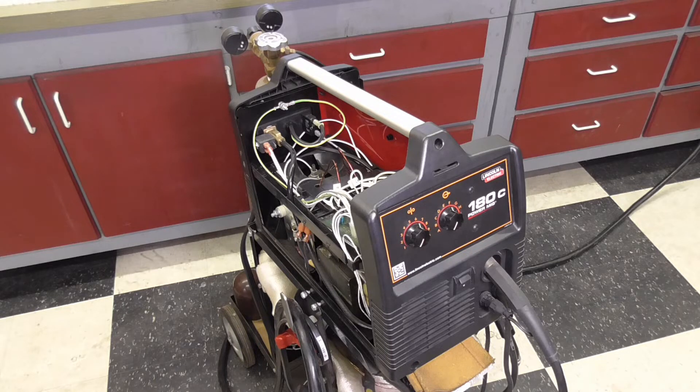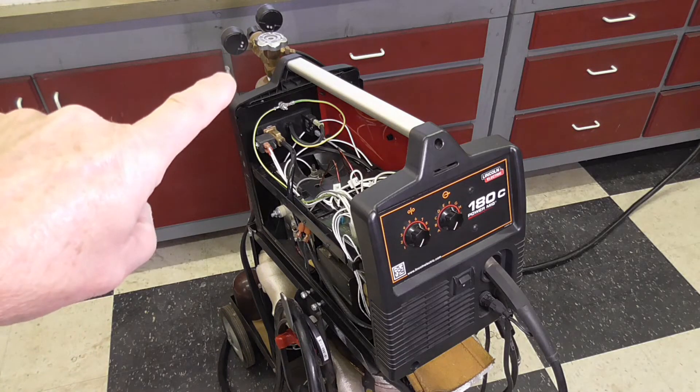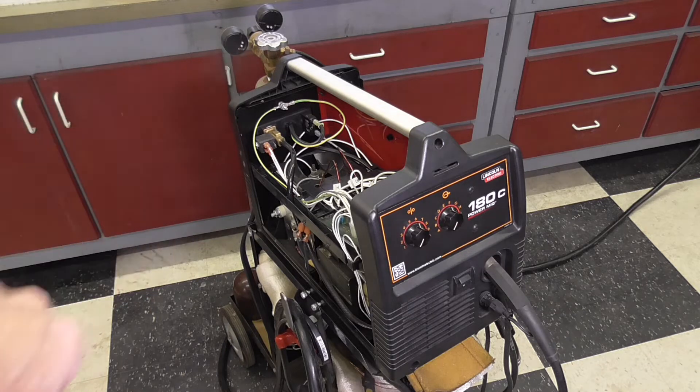It's a 240 volt MIG. That is a wire feed welder that does use gas. You can see the bottle back here in the upper left corner.